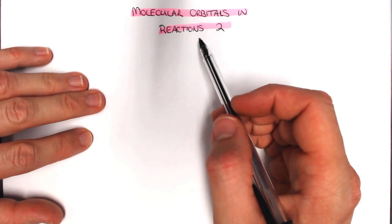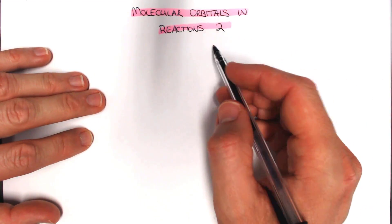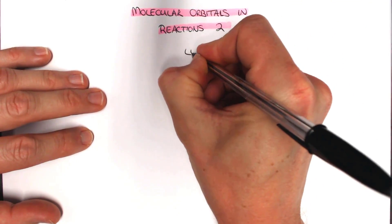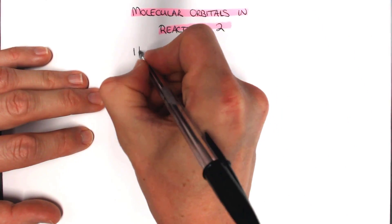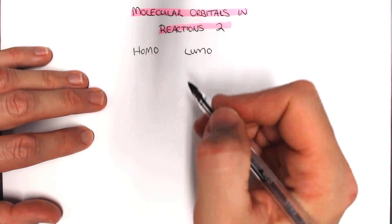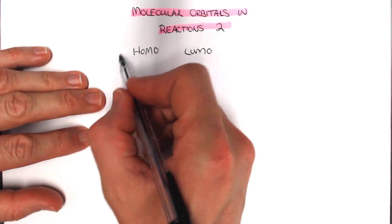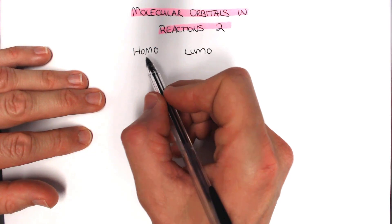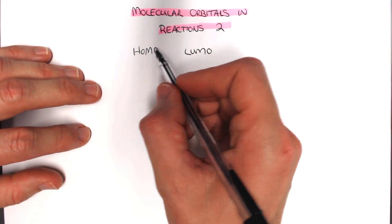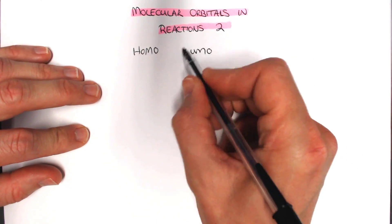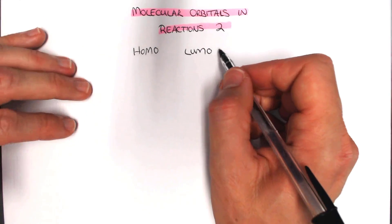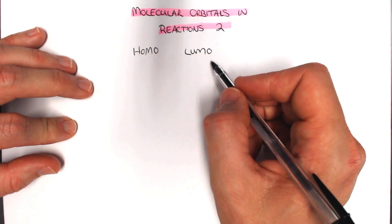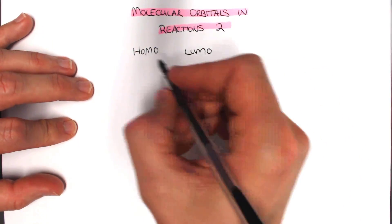We've been talking about molecular orbitals in reactions, and in this part two we're going to continue looking at the lowest unoccupied molecular orbitals. Just to remind you that all reactions generally occur between HOMO and LUMO interactions — the highest occupied molecular orbital, which we refer to as the nucleophile in organic chemistry, reacting with the lowest unoccupied molecular orbital, which is effectively the electrophile. Those are the two key orbitals as they interact.